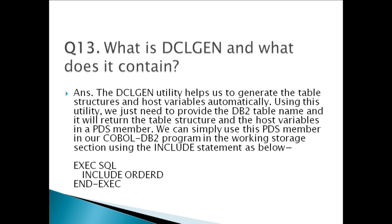The ORDER_D is a PDS member which is generated using the DCLGEN utility. It will have the structure of the ORDERS table and host variables for all the columns. For example, columns ORDER_ID and ORDER_DATE with data types CHAR(30) and TIMESTAMP will have host variables ORDER-ID PIC X(30) and ORDER-DATE PIC X(26) respectively.